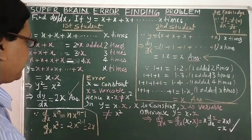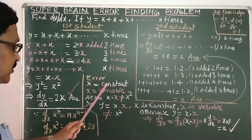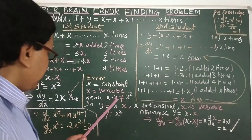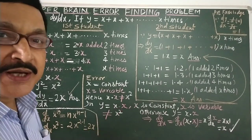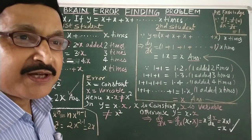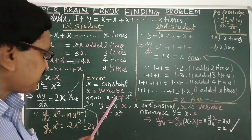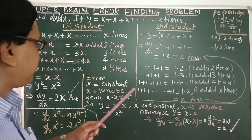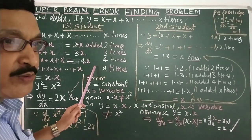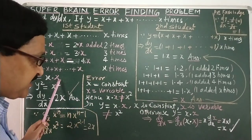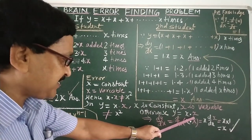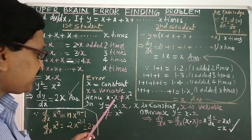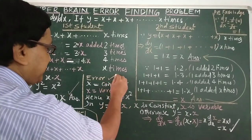Now, what is the error? The white x is constant; these are constants. But the colored x is a variable. x into x is never equal to x squared — we cannot multiply a variable with a constant. The white x is constant, the colored x is variable. So variable cannot be multiplied with constant. Two times x is 2x, three times x is 3x, four times x is 4x, and x times x is x·x itself — not x squared. We have detected the error: the topper committed an error.